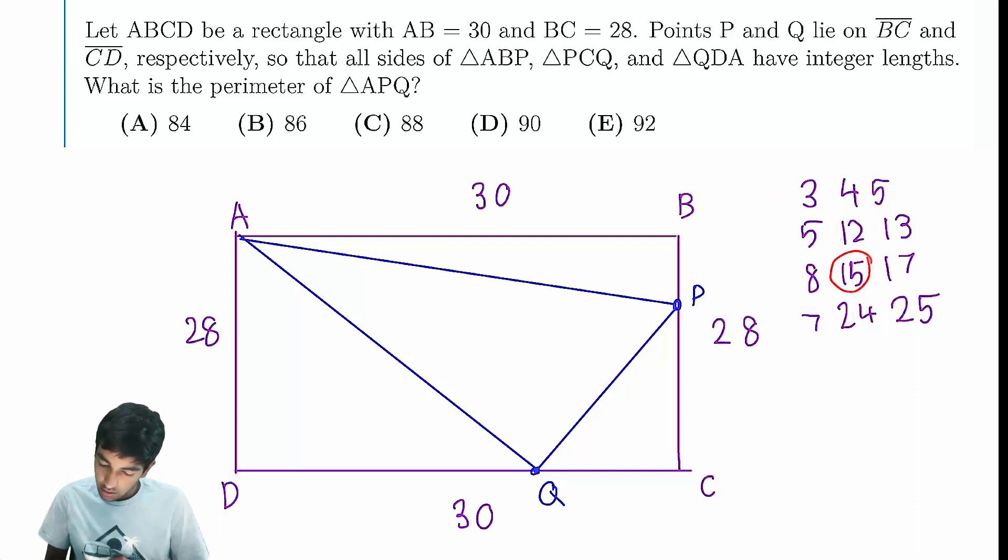Can we scale up this Pythagorean triple to get 30 in the central term? 8-15-17, we can. 15 times 2 is 30. So we get 16, 30, 34. And then that makes this 12.